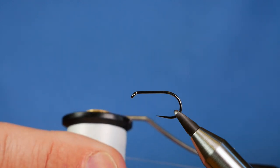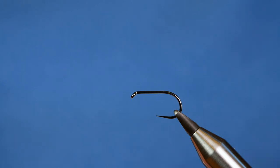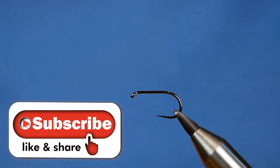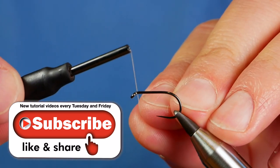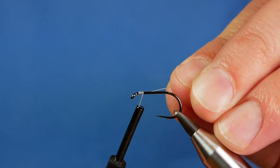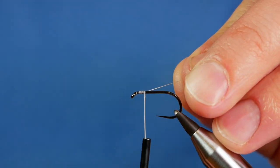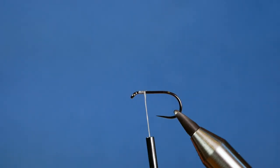The thread I'm going to be using initially is the uni thread. It's white and it's at 6-0. First thing I'm going to do is a little bit of wax onto the thread, rub my fingers through it, and I'm going to start quite well back from the eye actually, a couple millimeters back, and get three or four wraps down. Then I can remove my waste at this point.